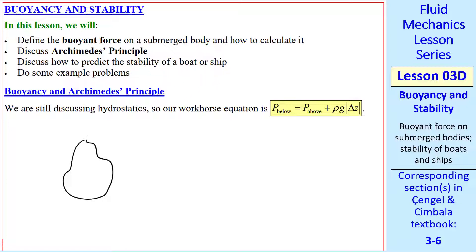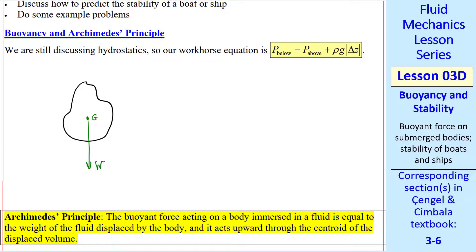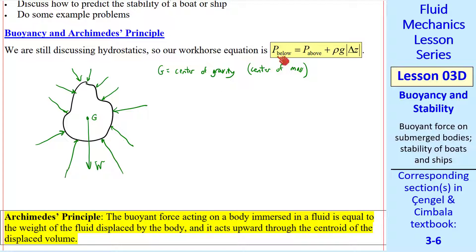Consider some arbitrarily shaped body. I like to call it a potato. The body has some weight which acts at the center of gravity, also called the center of mass. If this body is submerged in some fluid, that can be a gas or a liquid, there will be pressure forces acting normal along the entire surface of the body. Our workhorse equation is shown here, from which we know that the pressure at the bottom of the body is larger than the pressure at the top.